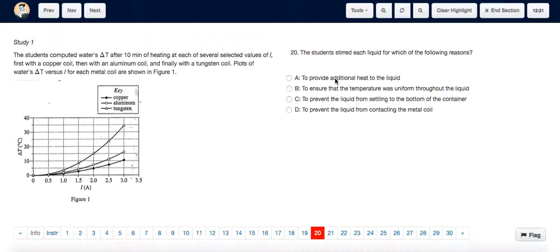However, stirring a liquid would barely provide a negligible amount of heat, so it's not A. Option B says to ensure that the temperature was uniform throughout the liquid. And indeed, if you stir a liquid, then you're ensuring that the temperature around the whole liquid becomes constant. So the answer is B.